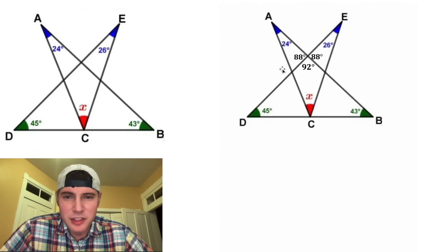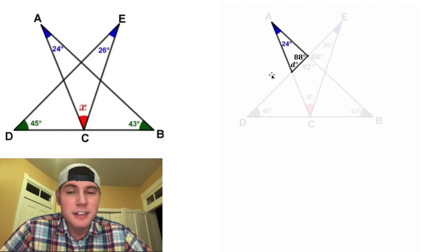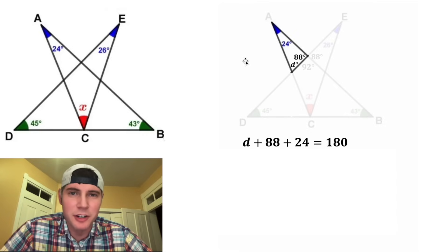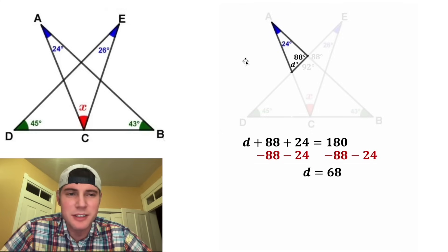Next, let's focus on this triangle right here. Let's let this angle be D degrees. Then we know that D plus the 88 plus 24 needs to equal 180. And after we subtract 88 and 24 from both sides, we get D is equal to 68. So we can update this to be 68 degrees.